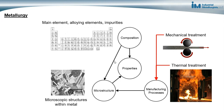Metallurgy is the science of metals. It involves understanding the relationship between the properties of a metal and its composition and microstructure. Composition refers to the main element in an alloy — whether it's iron in steel, or aluminum in aluminum alloys — along with the alloying elements present and any impurities. All those things affect the properties of a material.